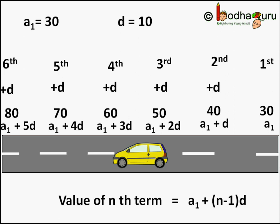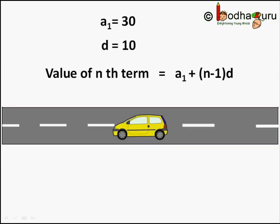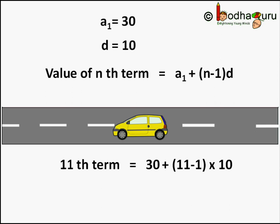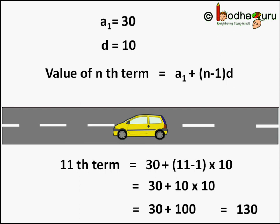What is its use? Let us say we want to find the total fare of the journey after 11 kilometres — that is the value of the 11th term of this arithmetic progression. We put 11 in place of n. The common difference is 10 rupees and the first term a1 is 30 rupees. So the nth term formula gives: 30 plus (11 minus 1) times 10, which is 30 plus 100, which equals 130. The fare will be rupees 130 for 11 kilometres.